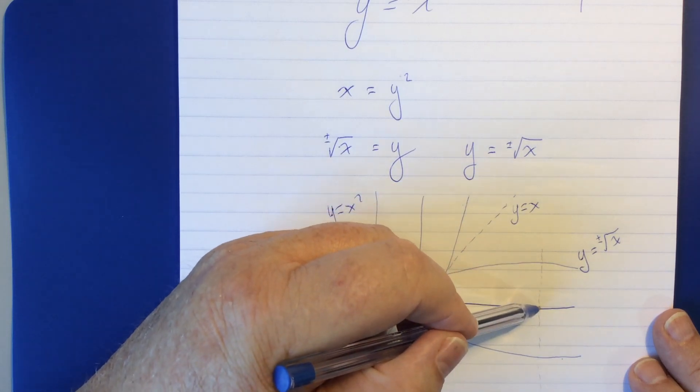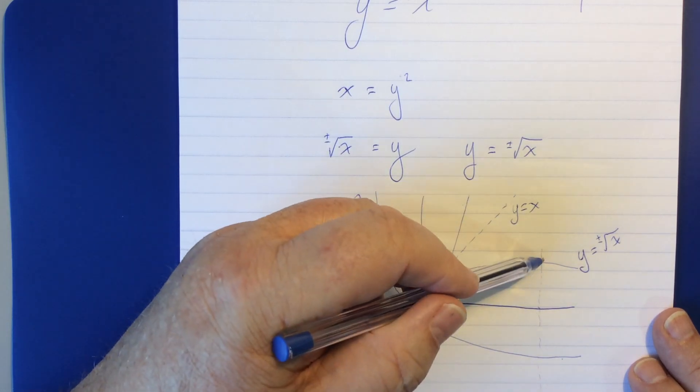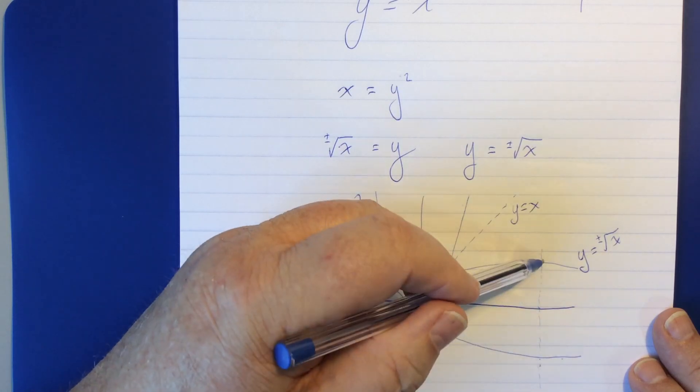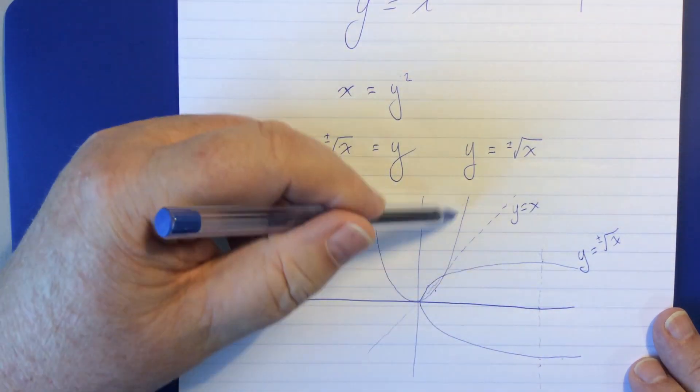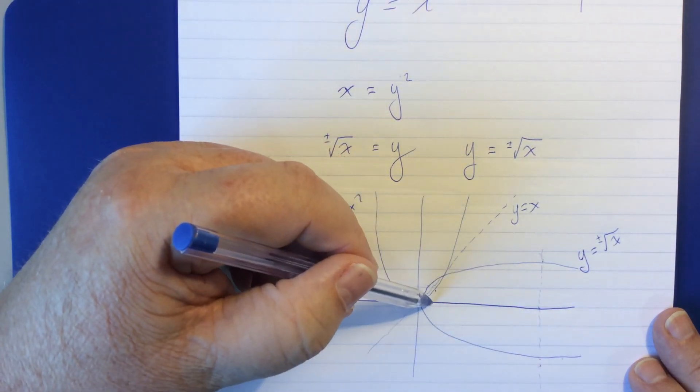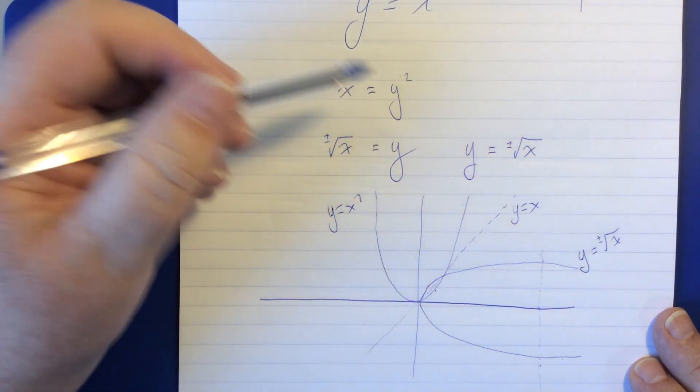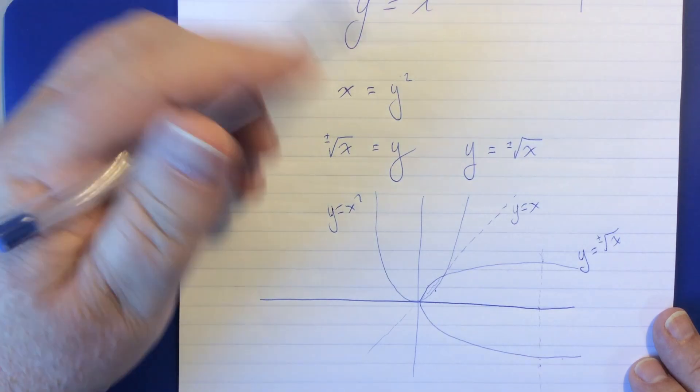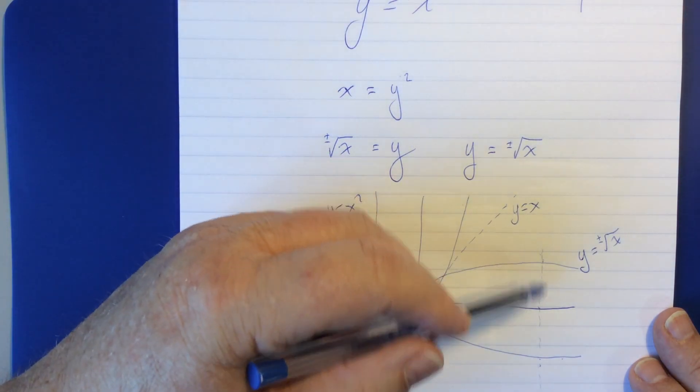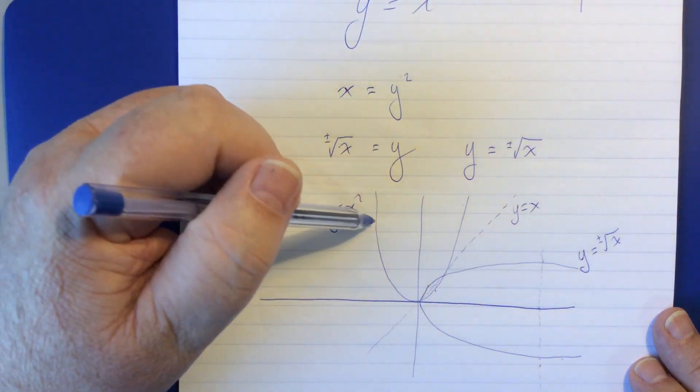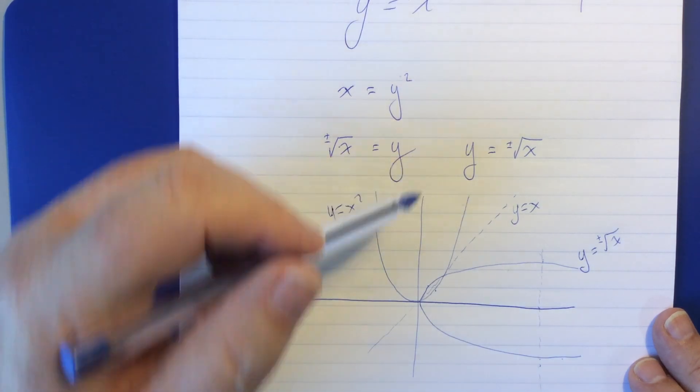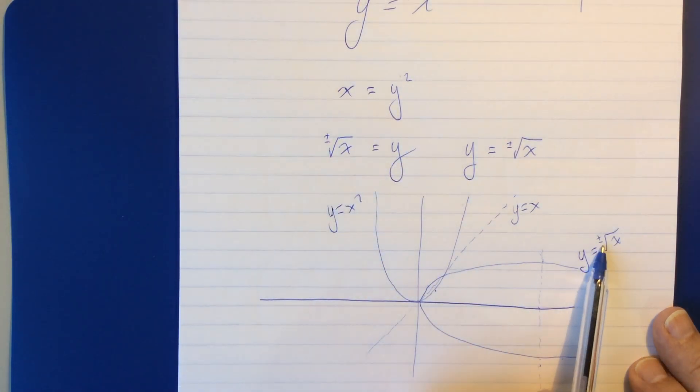And the reason for that is that if I draw a vertical line through here, I hit one point on the x-axis, but I hit two values here. And a function should only give me one value of y per value of the x-axis. So, this thing is a relation.